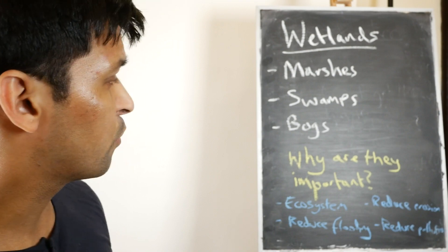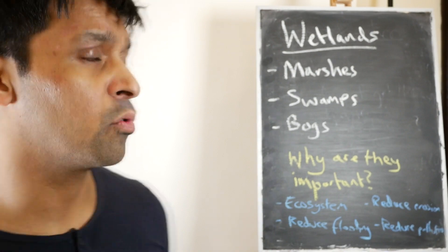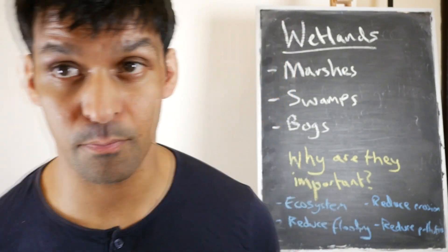Hello, welcome to Science Chomp. Today we're going to be talking about wetlands. A wetland is an area of land that's saturated with water for part or all of the year. They form in areas not deep enough to form lakes. There are three types that we need to worry about: marshes, swamps, and bogs.